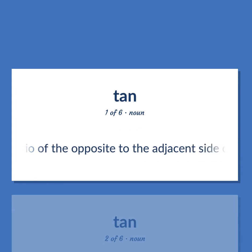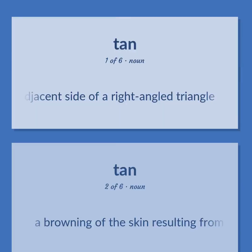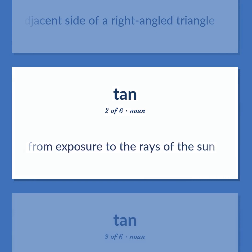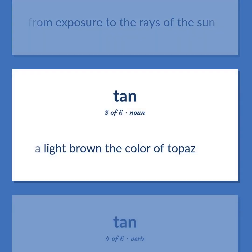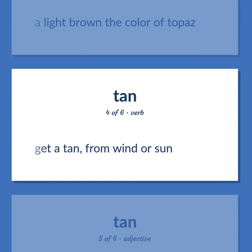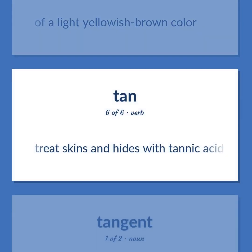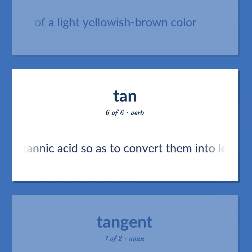Tan: Ratio of the opposite to the adjacent side of a right-angled triangle. A browning of the skin resulting from exposure to the rays of the sun. A light brown — the color of topaz. Get a tan from wind or sun. Of a light yellowish-brown color. Treats skins and hides with tannic acid so as to convert them into leather.